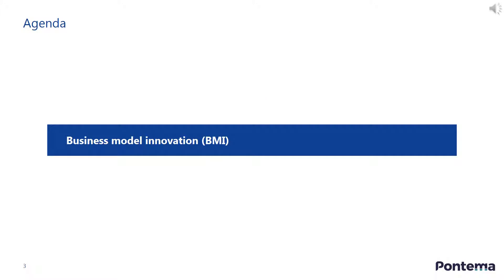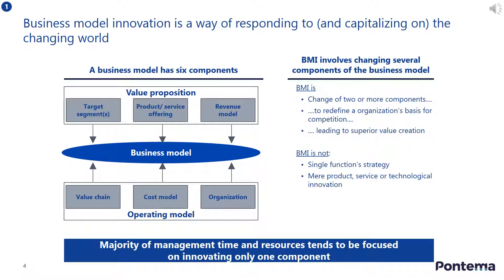For the first section of this lesson, business model innovation. You can think of business model innovation as a way of responding to and capitalizing on our changing world. A typical business model has six components. Three of them focus on the value proposition and include the target customer segments, the product or service offering, and the revenue model, such as a monthly subscription.